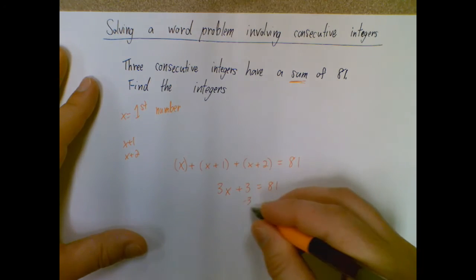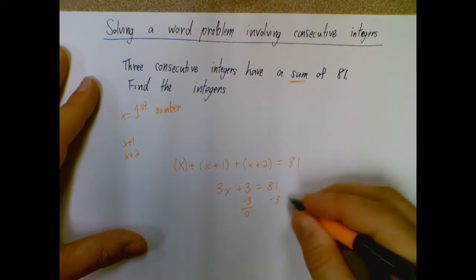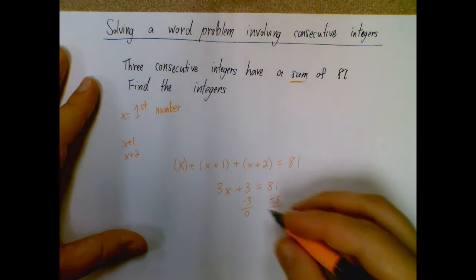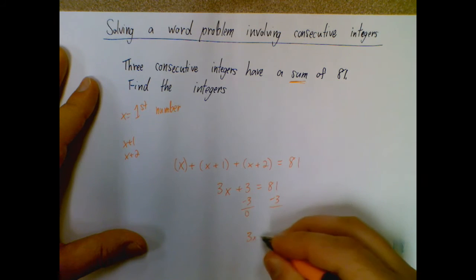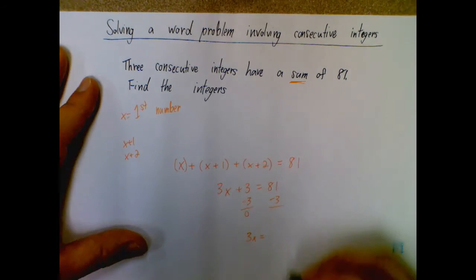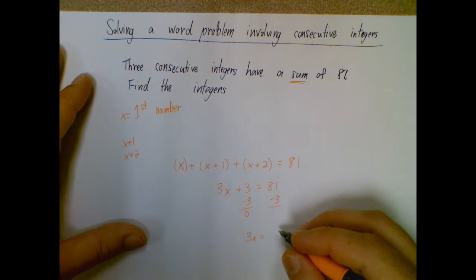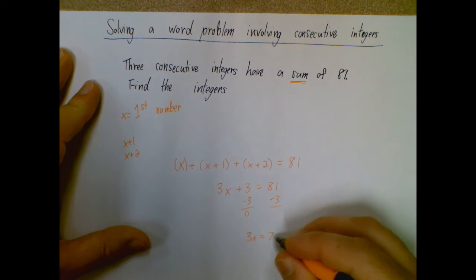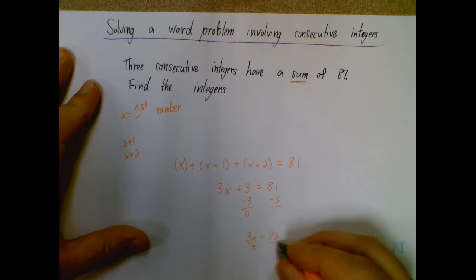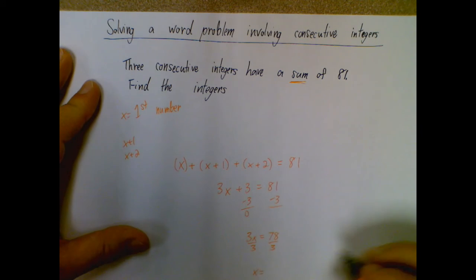Then I solve it like normal. So subtract 3, subtract 3, we get 0 here, which is important. Then we end up with 3x equals 81 minus 3 is going to be 78. Divided by 3, x equals...